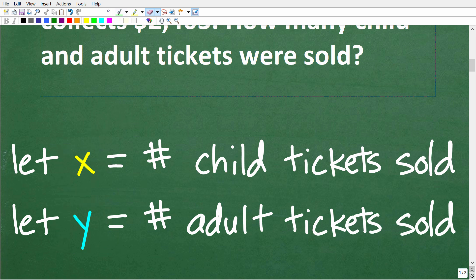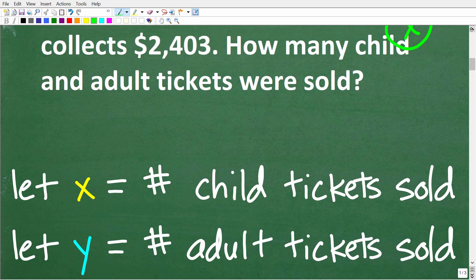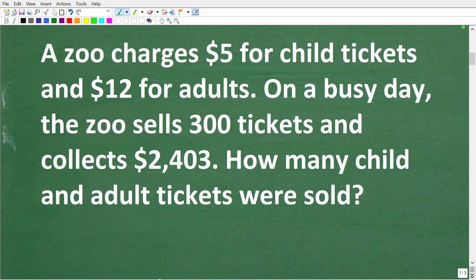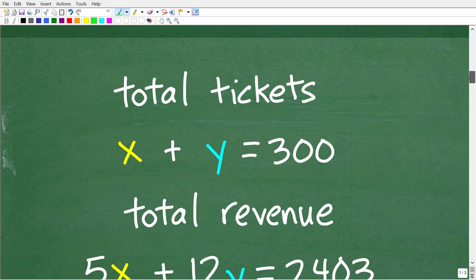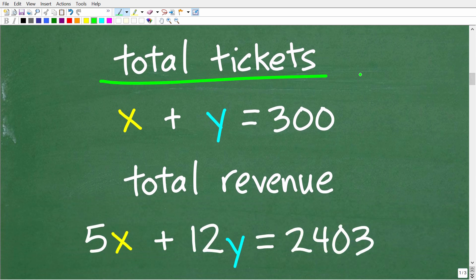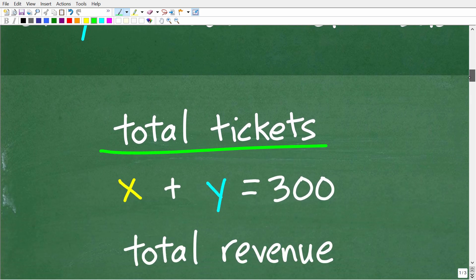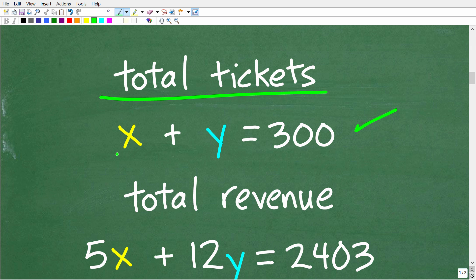We let x equal the number of child tickets sold and y equal the number of adult tickets sold. We need to build two equations with both x and y. One easy equation comes from the total number of tickets sold: child tickets plus adult tickets equals 300, so x plus y equals 300.